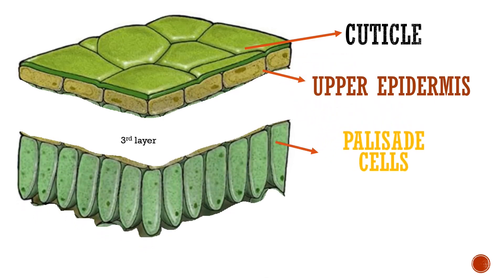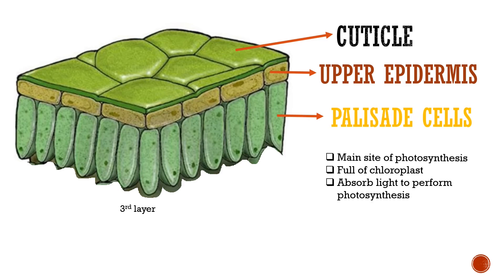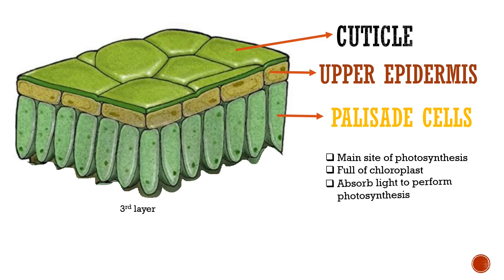The third layer is the palisade cell. Palisade cell is the main site of photosynthesis because it's full of chloroplasts. Chloroplasts absorb light to perform photosynthesis.